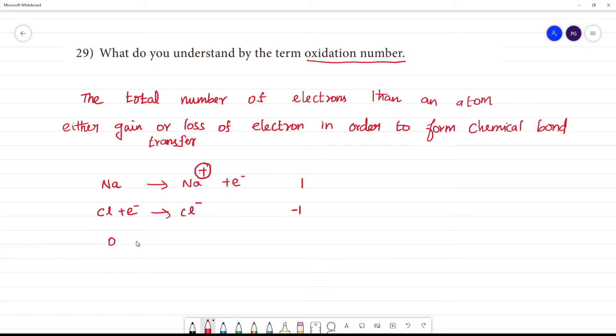Oxygen gains 2 electrons. The oxidation number is -2. This gain or loss occurs in order to form a chemical bond.